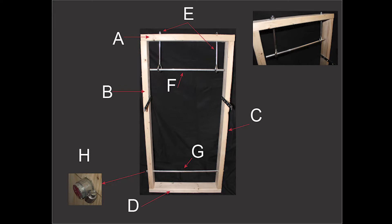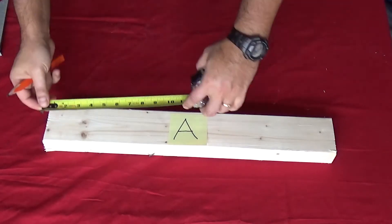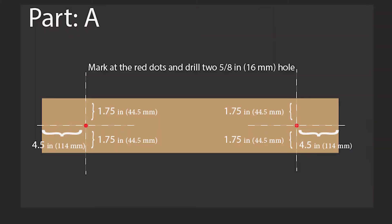We will begin by cutting all the wood pieces according to the measurements found in the materials section. Starting with piece A, which is the upper beam. Mark the two holes and drill both.